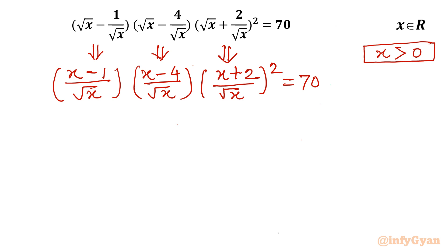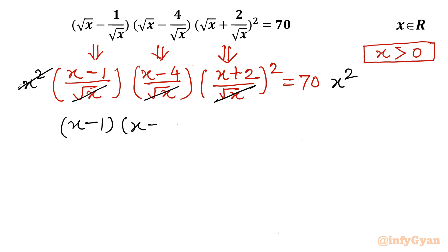In the denominator we have root x times root x times (root x whole square). Root x squared is x, and root x times root x is also x, giving x squared overall. Multiplying both sides by x squared cancels the denominators. What remains is: (x minus 1)(x minus 4)(x plus 2)² = 70x².